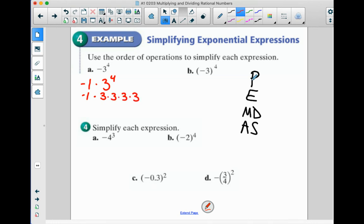So let's see. 3 times 3 is 9. 3 times 3 is 9. 9 times 9 is 81. And negative 1 times 81 is negative 81.